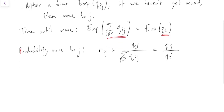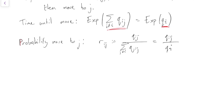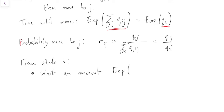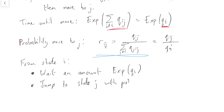This is the crucial idea: from state i, we wait an amount of time that is exponentially distributed with rate q_i, where q_i is the sum of all transition rates out of i. Then we jump to state j with probability r_ij, where r_ij is q_ij over q_i. This answers the two questions: how long do we wait — exponential q_i — and where do we move — given by probabilities r_ij.